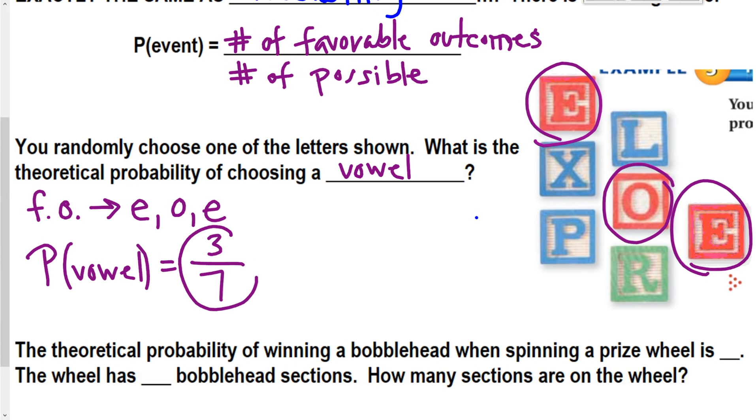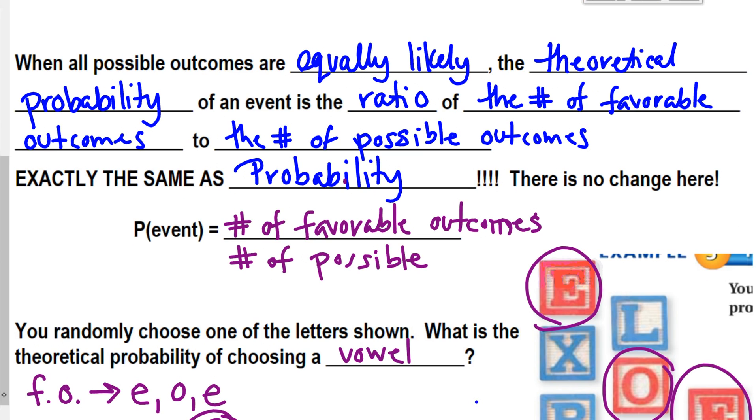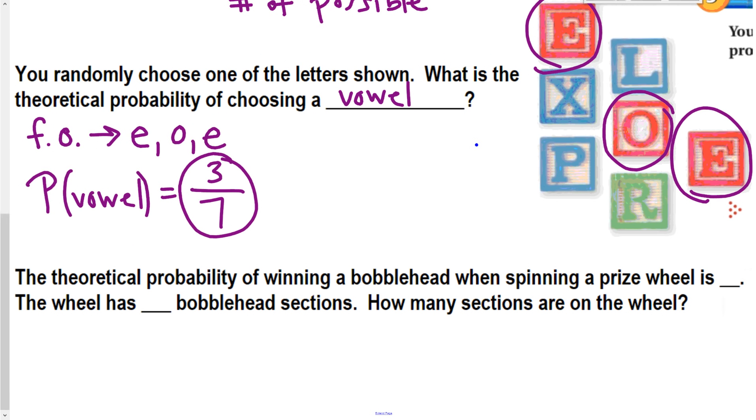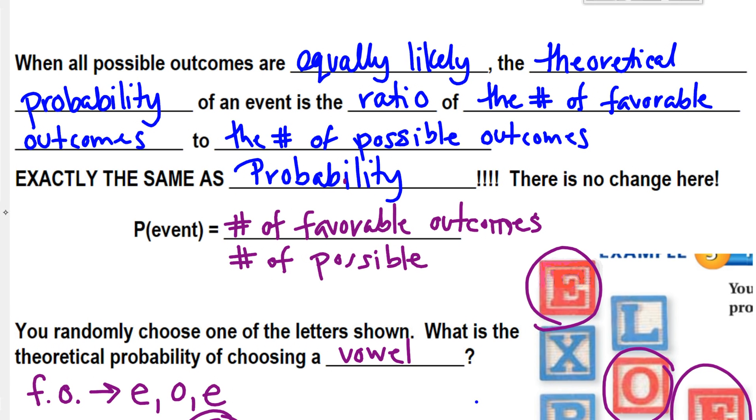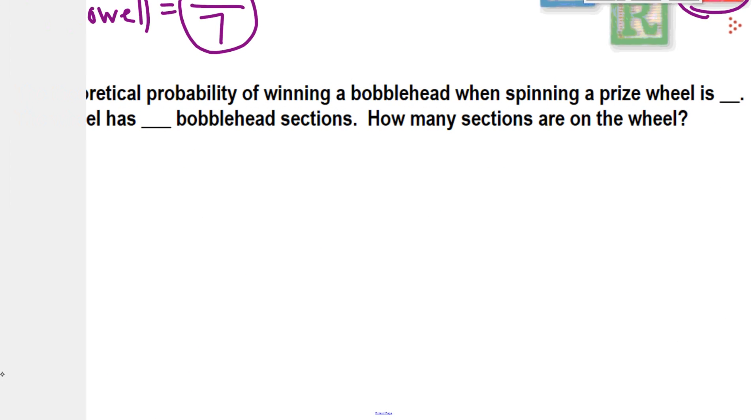So you can just leave your probability as three-sevenths. You don't need to really find the decimal version.